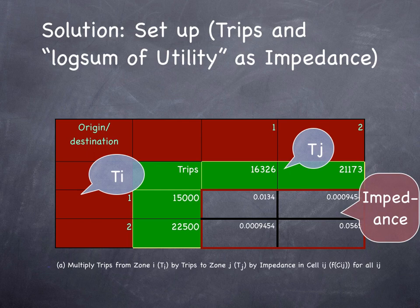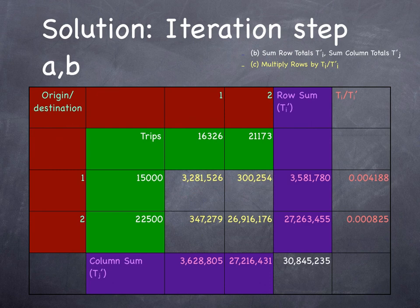So the algorithm says multiply the number of origins in zone 1 by the number of destinations in zone 1 by the impedance for zone pair 1,1. Similarly, multiply the number of origins in zone 1 by the number of destinations in zone 2 by the impedance between zones 1 and 2. Similarly, for origin zone 2. For zone pair 1,1, we have 3.3 million as our number. 300,000 for zone pair 1,2. We sum up those numbers, and that gives us the number 3.6 million with some rounding. And we compare 15,000 over 3,581,780. And that gives us our adjustment factor, 0.004188, which we can then multiply by the values in cell 1,1 and cell 1,2. And replace these numbers with the adjusted numbers, which will add up to 15,000.